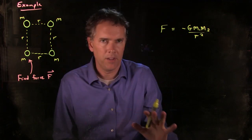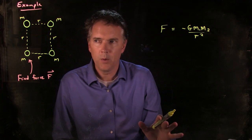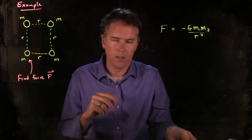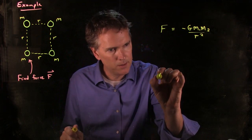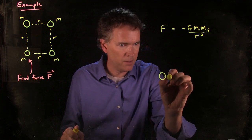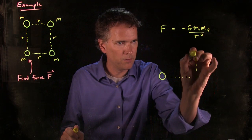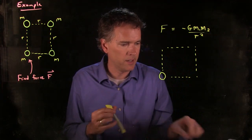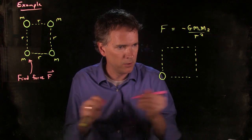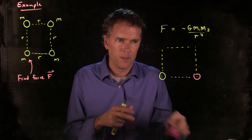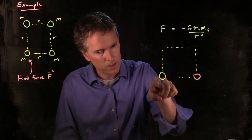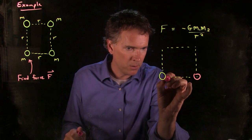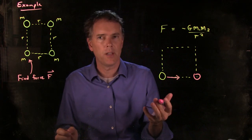Since all the masses are the same in this problem, that simplifies things quite a bit. But what we need to worry about is the vector nature of these forces. Let's think about this particle in a little more detail. Here's my object right there, sitting on the corner of this square. Let's draw one of the particles and see if we can calculate the force due to that one. What is the force on my yellow guy due to this pink guy? Well, it is clearly along the line, clearly going to be towards the other guy, and it's going to have some particular strength.